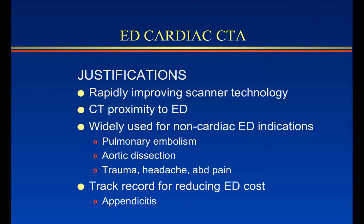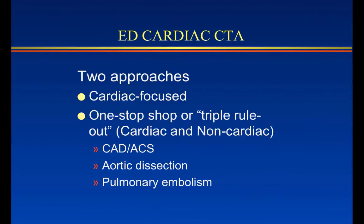We're going to talk about the triple rollout and how it compares with dedicated coronary CTA and where one might want to use it. The term triple rollout refers to a comprehensive gated study of the thorax, and the triple refers to acute coronary syndrome, aortic dissection, and pulmonary embolism — those serious things we're trying to rule out — although the name is somewhat of an oversimplification.